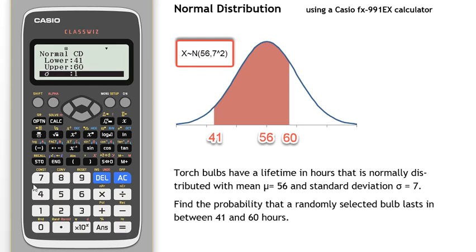The standard deviation is 7, hit the equals button. And the mean is 56, hit the equals button.